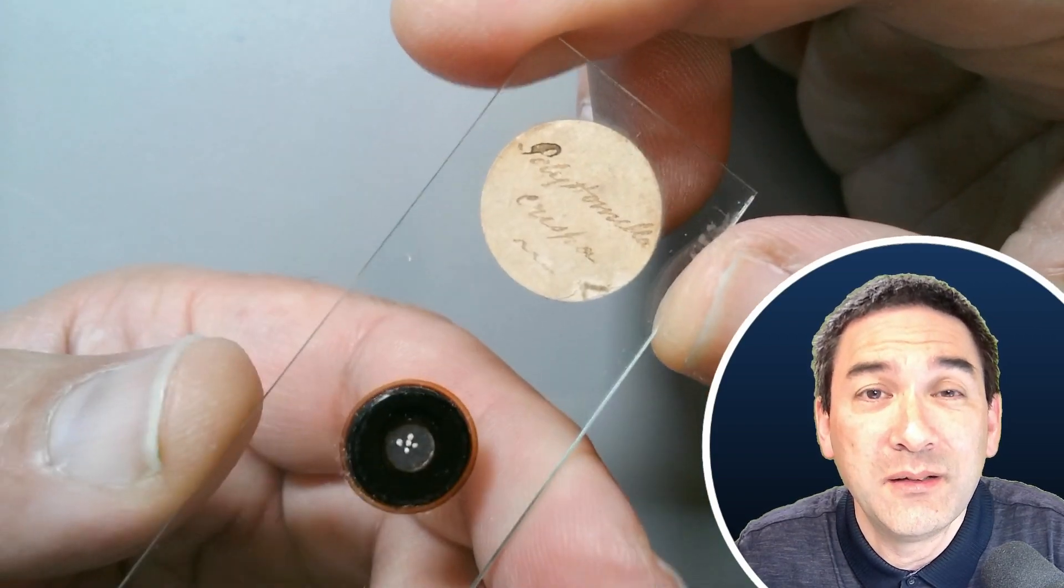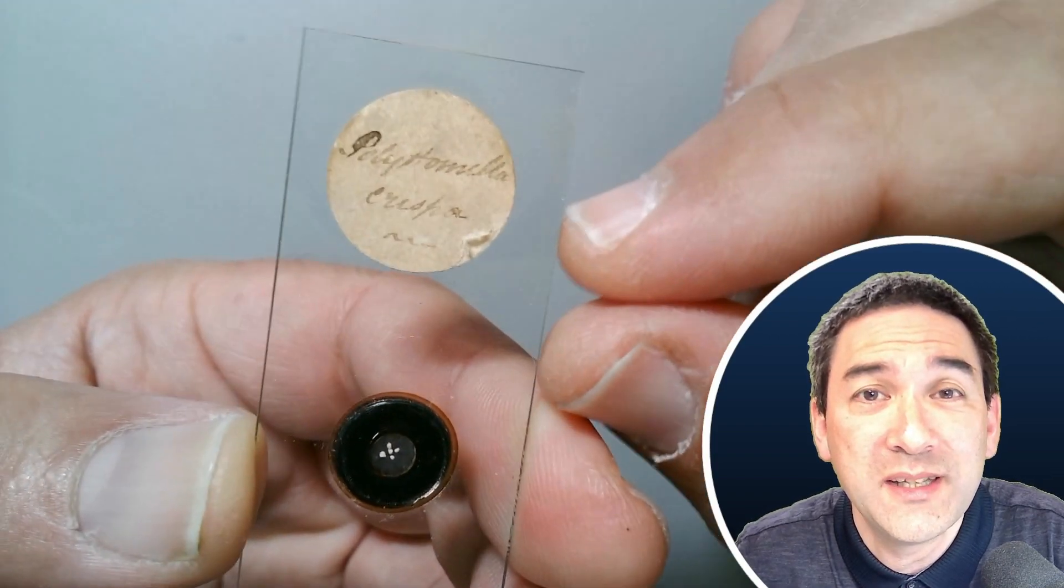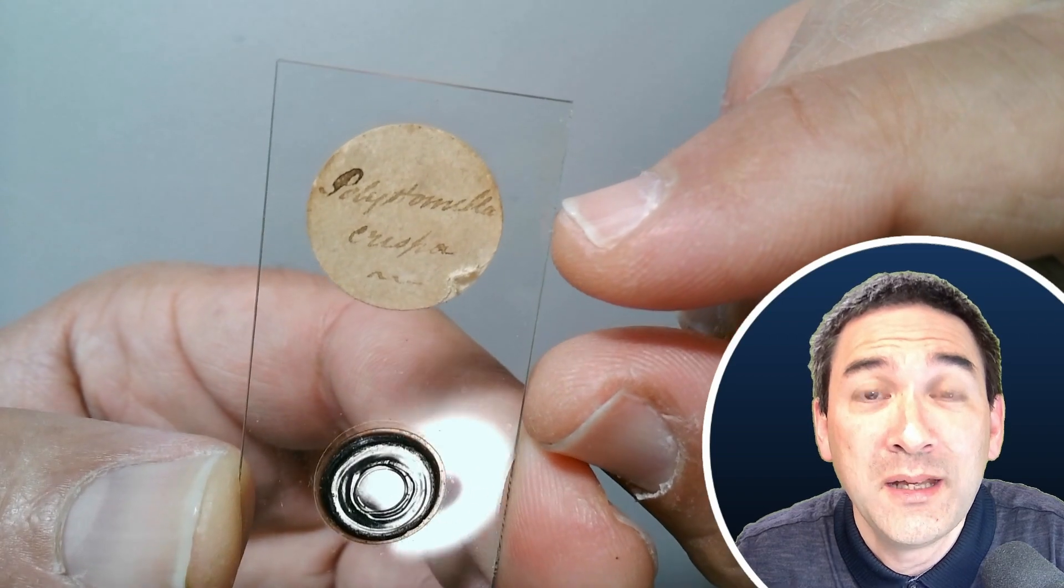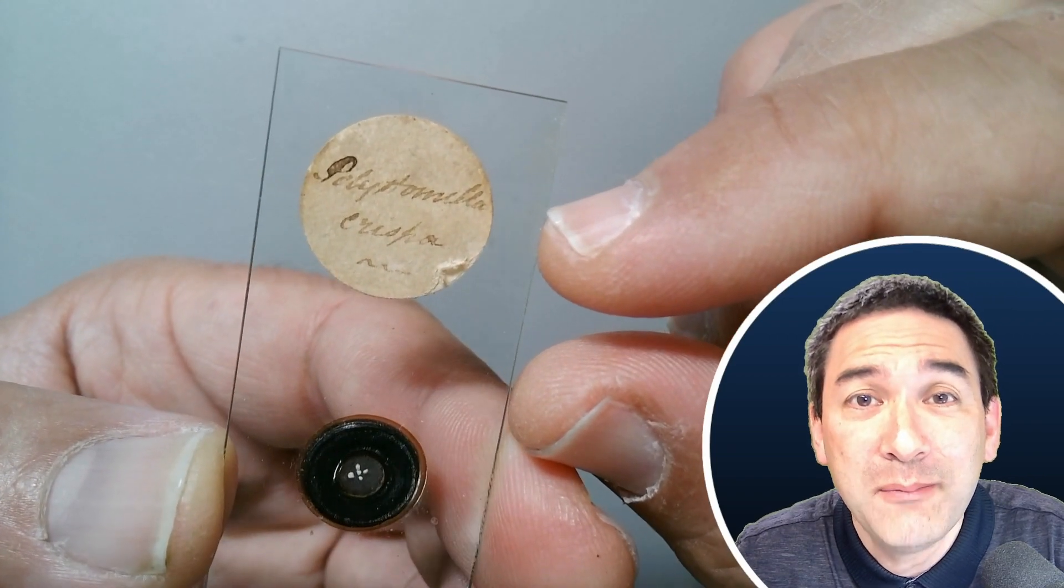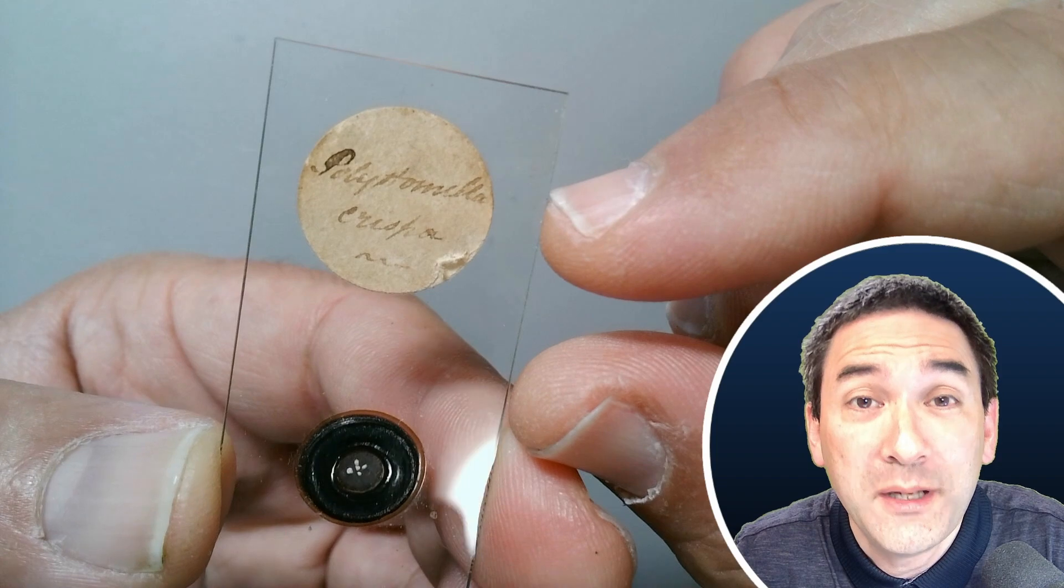The slide label is difficult to read here. It says Polystromella crispa, and indeed that is the name of a certain species of foraminifera.